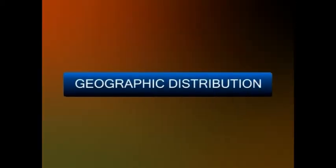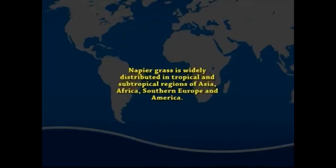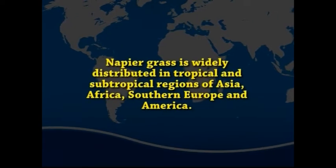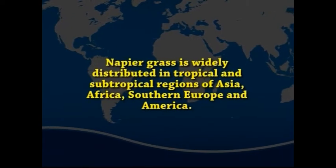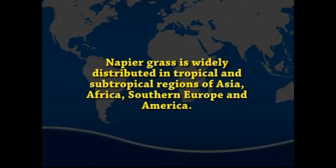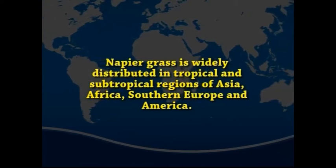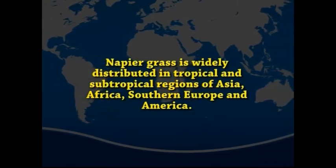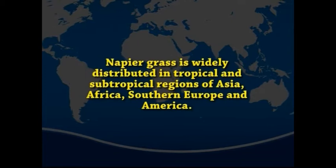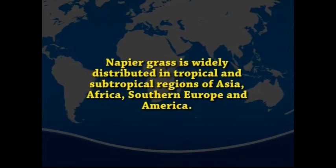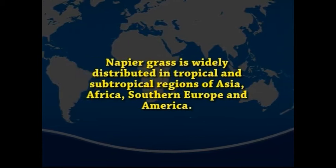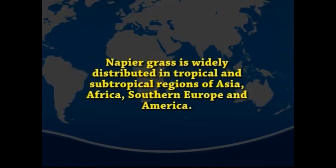We will discuss about geographic distribution. Napier grass is widely distributed in tropical and subtropical regions of Asia, Africa, Southern Europe, and America.